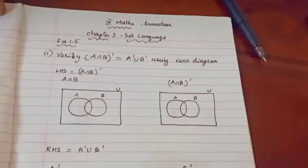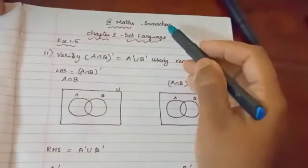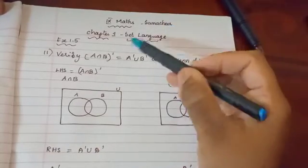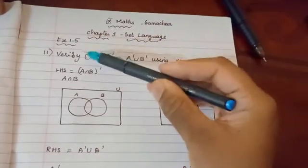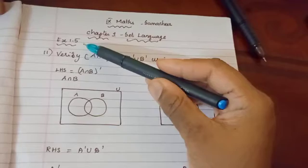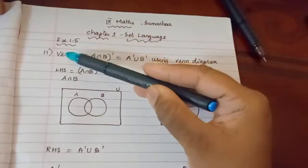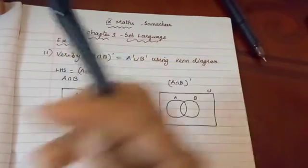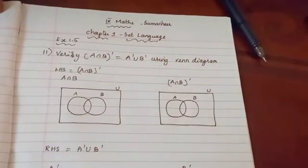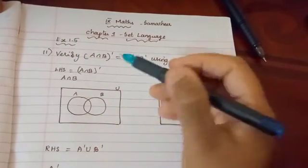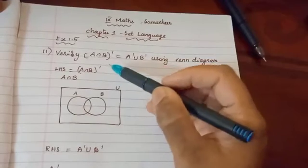Students, in the game - 9th grade math, chapter 1 set language, exercise 1.5, question 11. This is a very very important 5-mark sum - it's a verification problem.